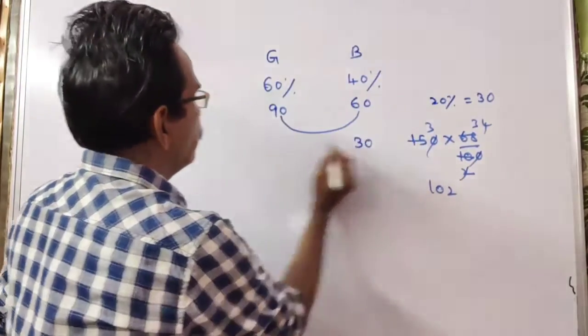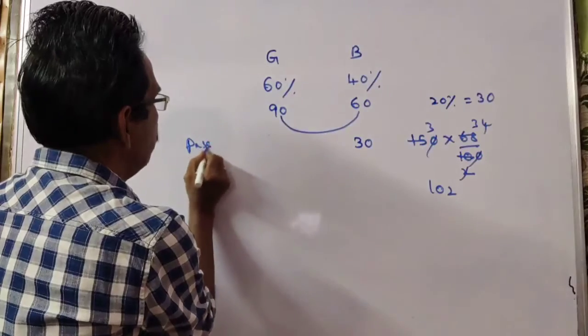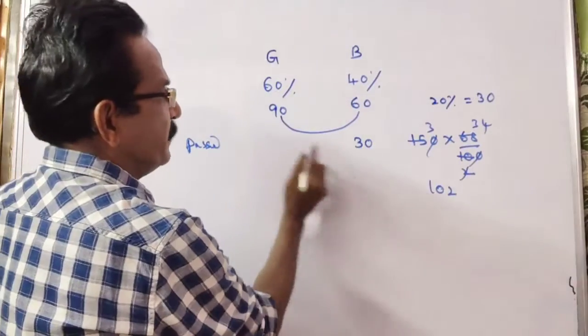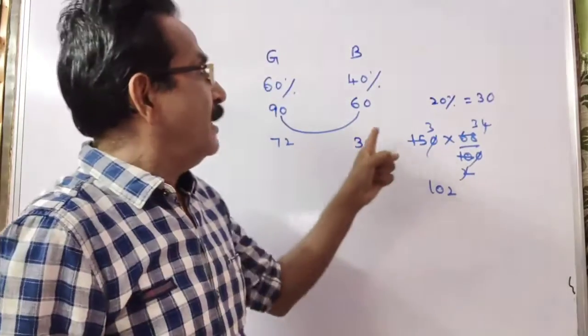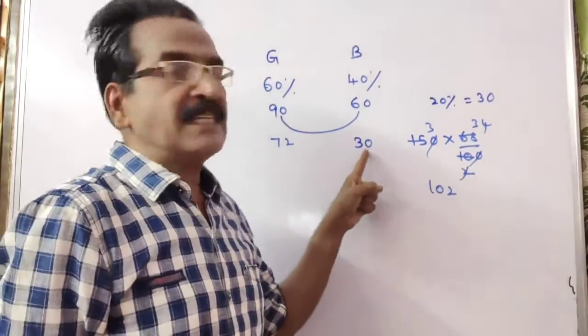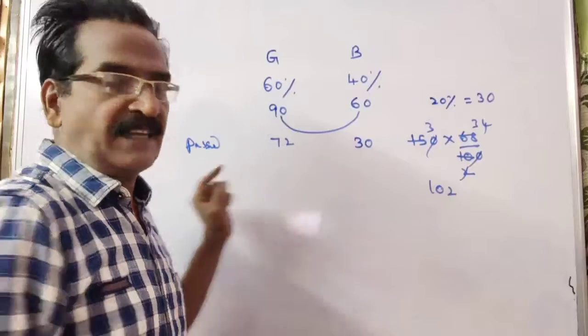So, boys passed 30. The remaining 72 are girls. Total passed 102. In 102, boys are 30, so girls are 72.